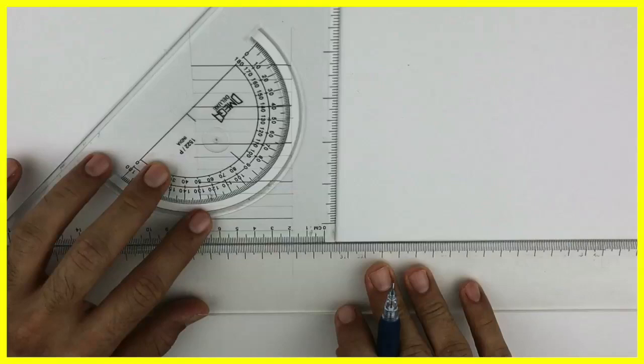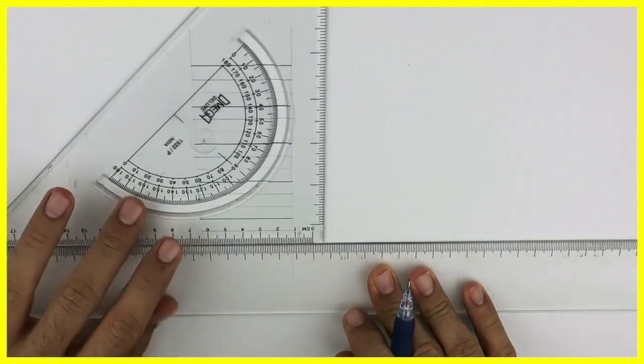See when you are drawing line, make sure that there is no play. It has to be straight.